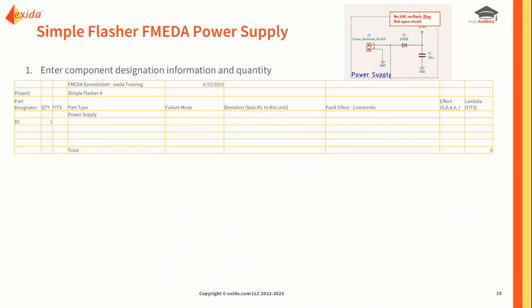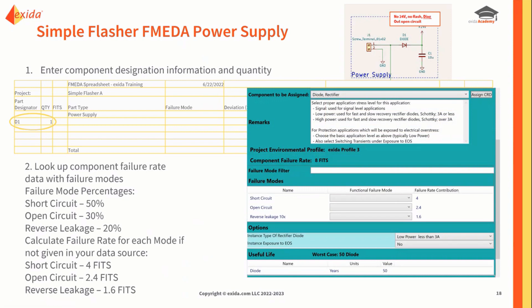Let's start with the power supply block. We've entered the project information. Let's enter the designator for D1, the diode. Now we need to get the component failure modes and failure mode distributions, and therefore the failure rates for each specific failure mode. You would have to get those from your component database. In our case, we're going to use the component reliability database from the FMEDA-X tool.